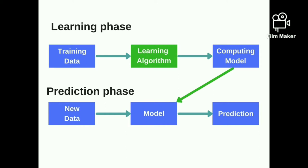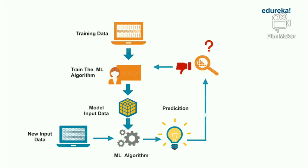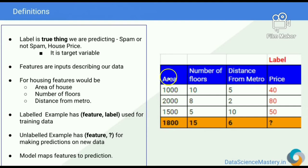How does machine learning work? A machine learning algorithm is trained using a training dataset to create a model. When new input data is introduced to the algorithm, it makes a prediction based on the model. The prediction is evaluated for accuracy. If the accuracy is acceptable, the algorithm is deployed; if not, it is trained again with an augmented training dataset.